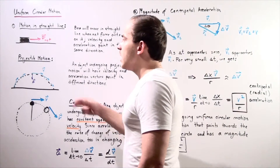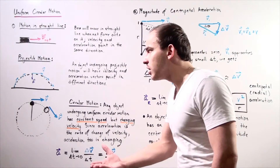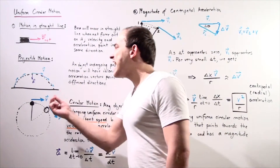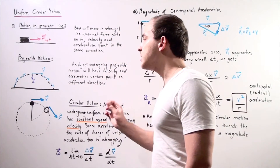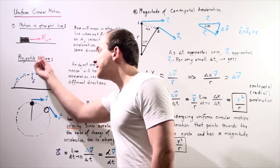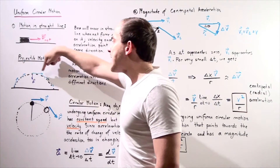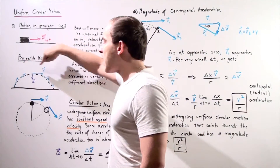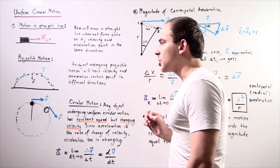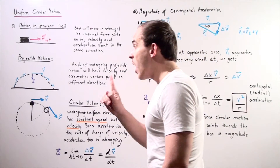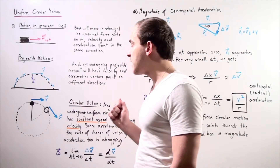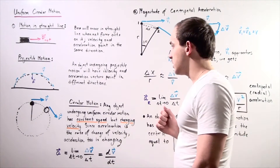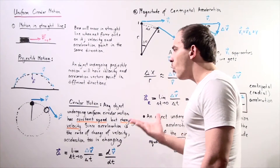What about objects moving in projectile motion? If an object undergoes two-dimensional projectile motion, it follows a parabolic pathway. Notice that the net force does not act in the same direction as the motion — the net force acts perpendicularly to the ground while the motion continually changes. At the highest point on the pathway, the velocity vector points parallel to the ground while the acceleration and net force vectors point perpendicularly to the ground. So an object undergoing projectile motion has velocity and acceleration vectors that point in different directions.